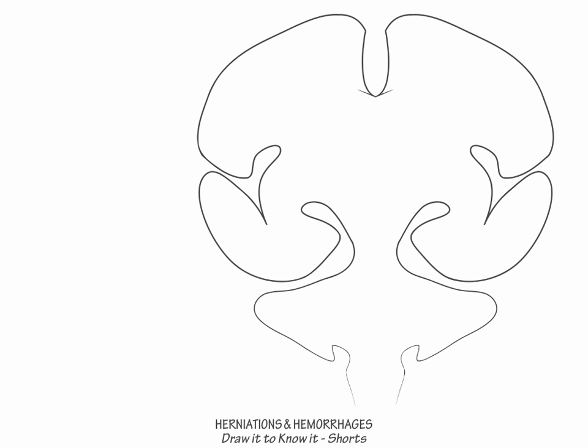First, draw the brain, cerebellum, and spinal canal. Next, indicate that the tentorium cerebelli divides the cranial vault into a supratentorial compartment, which contains the cerebral hemispheres, and an infratentorial compartment, which contains the cerebellum and brainstem.